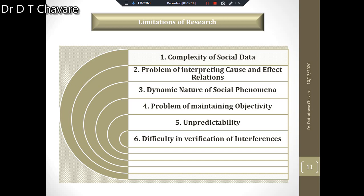The next limitation is predictability. Researchers in physical science can predict future trends and events, as the laws of physical sciences are universal and true for all times under given circumstances. But in social science research, because of the complexity of social data and simultaneous effects on human behavior, future events or trends cannot be predicted precisely — only a rough estimation about social phenomena can be made.